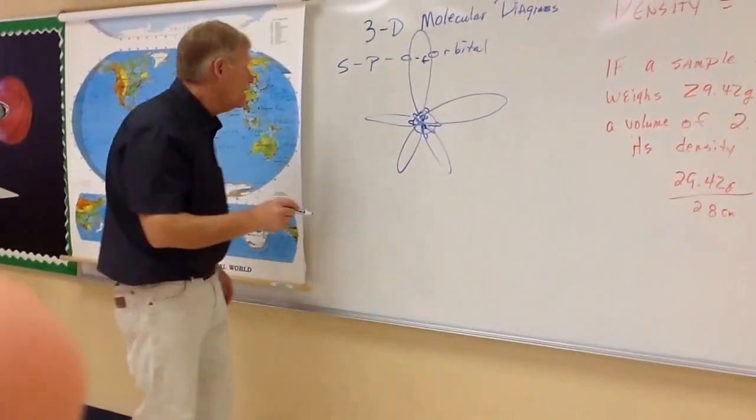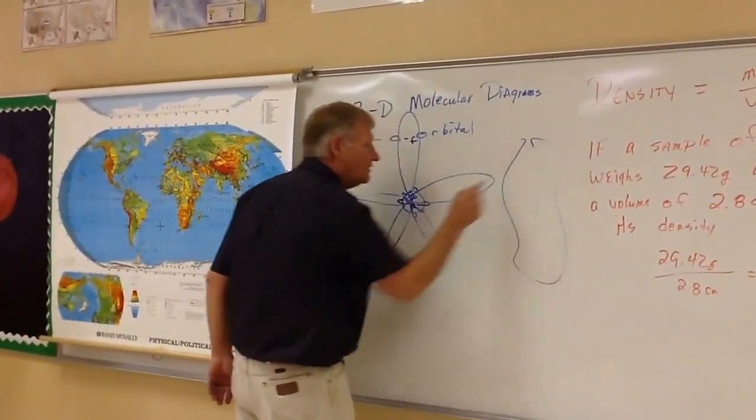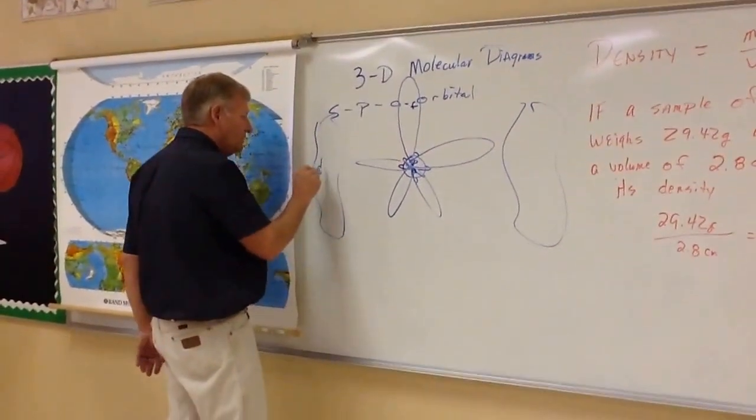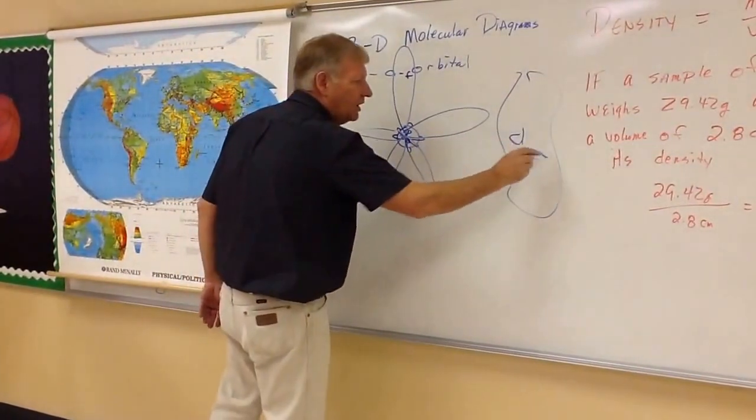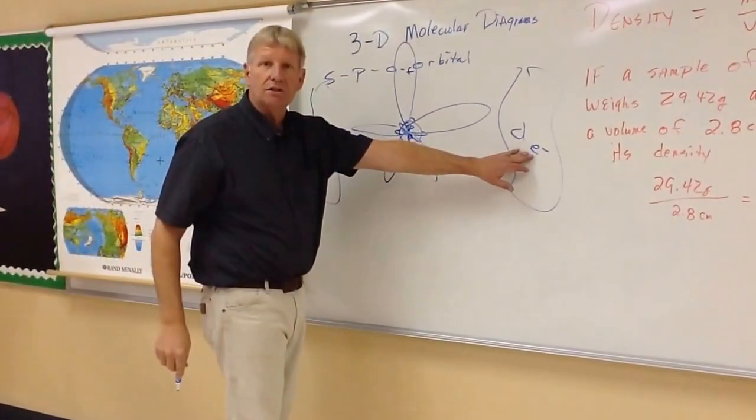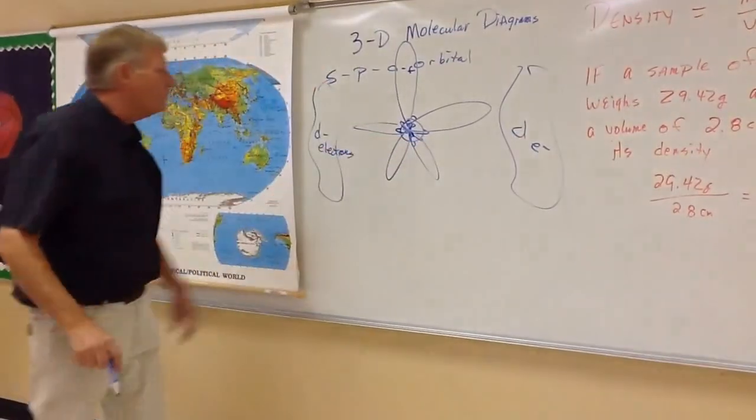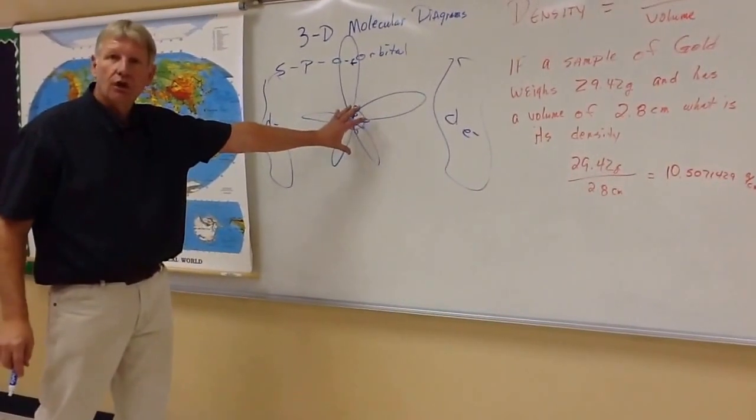Now, it's kind of interesting because the D orbitals are electrons that hang around the side. So these are the D electrons. And oftentimes in chemistry, we'll just show electrons. It's E minus. So these are the D electrons. Well, look, they're just standing out there. They're not even attached to the nucleus.